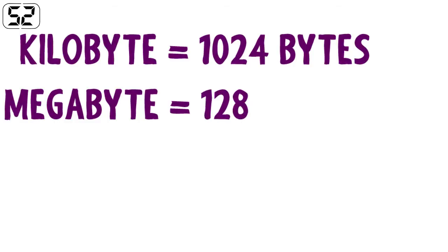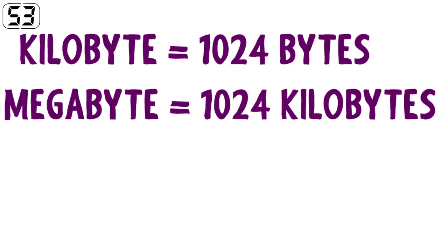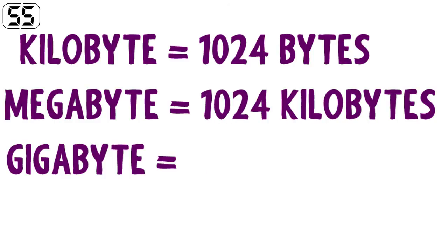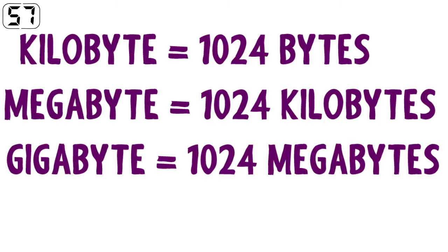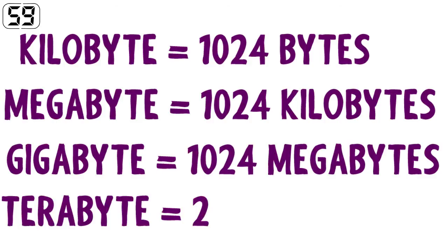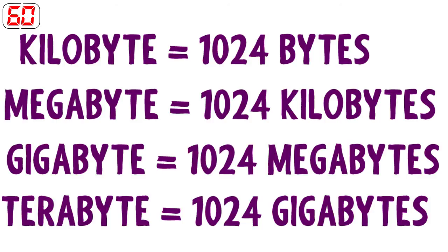1024 kilobytes equals 1 megabyte. In turn, 1024 megabytes equals 1 gigabyte. And 1024 gigabytes equals 1 terabyte.